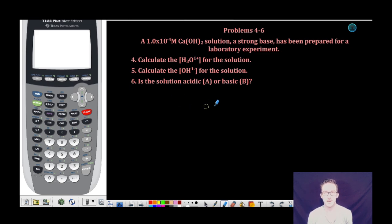Okay, let's take a quick look at problem numbers 4 through 6. This time we're given a 1.0 times 10 to negative 4 molar calcium hydroxide solution, a strong base, has been prepared for a laboratory experiment.